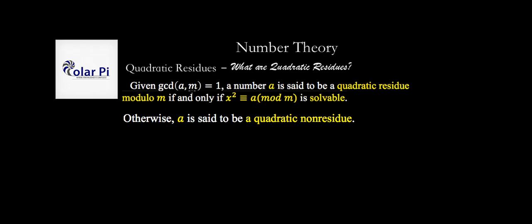Given that the greatest common divisor of the integer a and the integer m is 1, then the number a is said to be a quadratic residue modulo m. It makes sense to talk about quadratic residues only modulo some number m, if and only if x² ≡ a (mod m) is solvable. Another way to say this is that a is a quadratic residue mod m if a is a square mod m. Otherwise, a is said to be a quadratic non-residue.